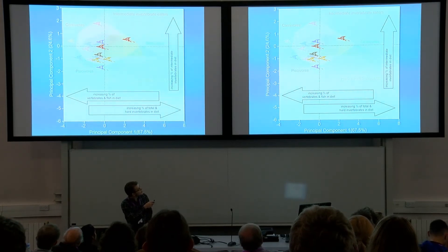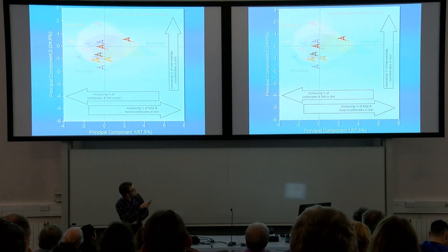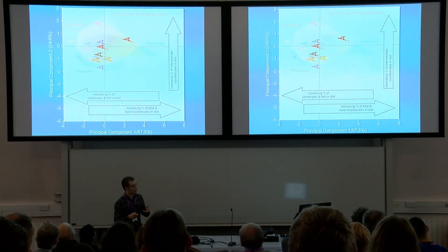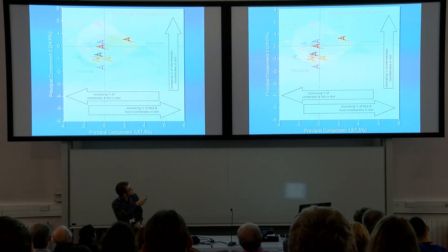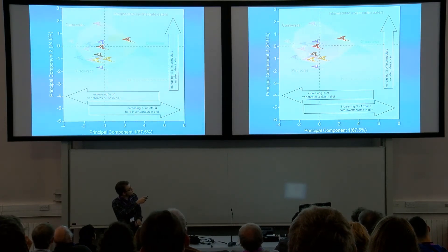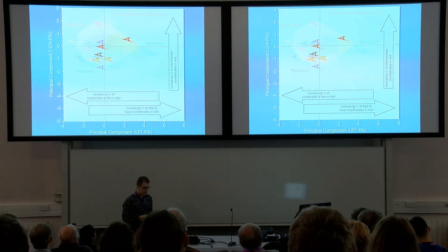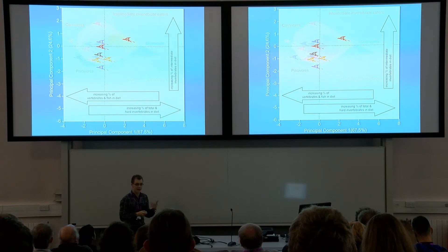Scaphognathian pterosaurs in purple show high fidelity in vertebrate proportions but potential diversity in intermediate invertebrates. Germanodactylus in brown is interesting because many palaeontologists think it was an exclusive insectivore, although its microwear indicates it may have consumed more vertebrates than previously anticipated. The two Campylognathoidids in orange show a dietary spread along PC1, notably one specimen from the late Triassic and one from the early Jurassic, suggesting not only dietary diversity within the group but potentially dietary evolution over time.